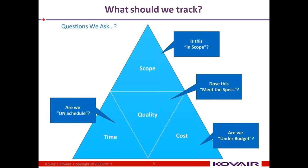So the basic questions we should ask in these different areas — let's say for scope, the first and foremost question is: is this in scope? Whenever someone brings in some new thing or a change, this is the question that needs to be asked about any type of scope creep — are we in scope? Or when someone brings in something new for implementation, we should ask: shall we implement this? Is it within scope, or how much deviation might this bring in?